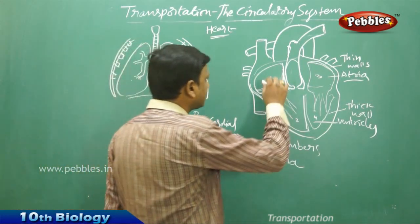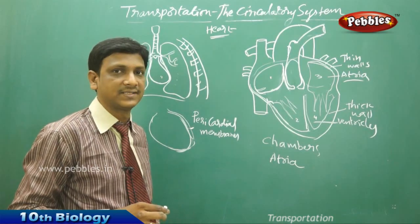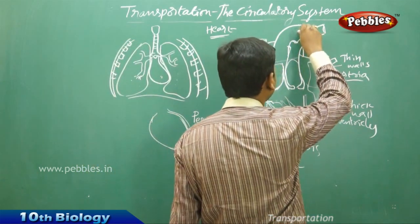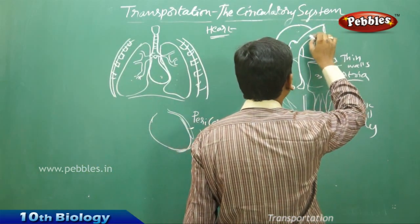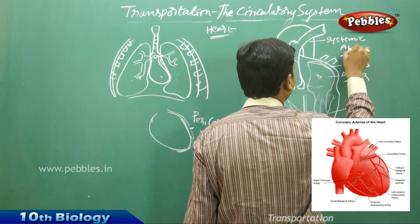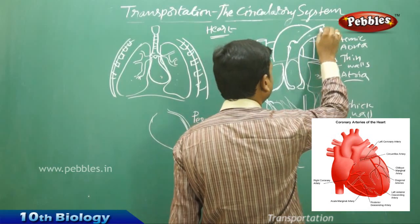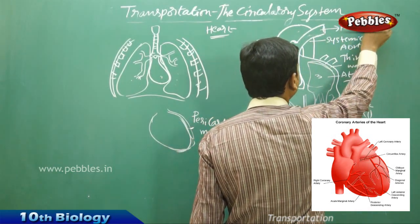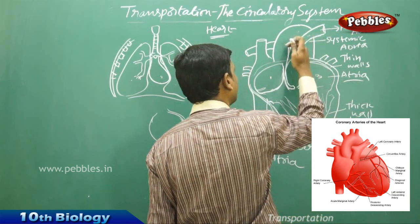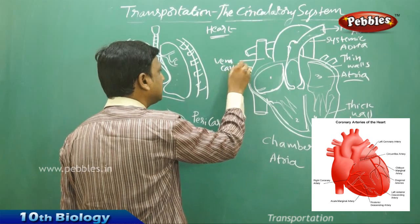The heart is connected to various blood vessels. Among these blood vessels, some are called arteries and some are called veins. One major vessel is called the systemic aorta — the major systemic artery. Another is the pulmonary artery. There is also the vena cava, which is a major vein, branching into two connections.